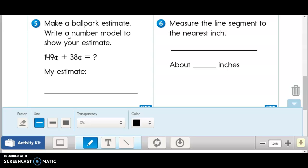Number five. It says make a ballpark estimate. Write a number model to show your estimate. And we always clarify that direction, friends, don't we? We always say, are we rounding to the nearest ten? Are we rounding to the nearest hundred?